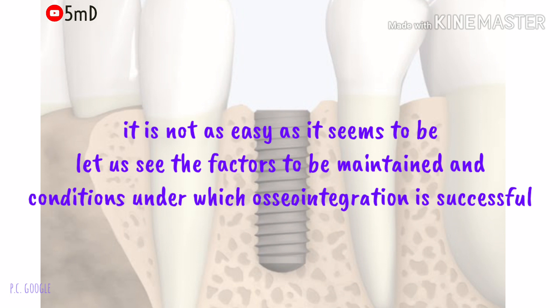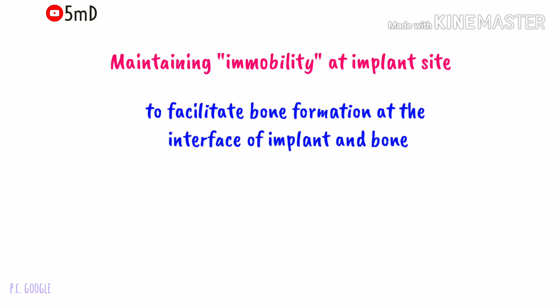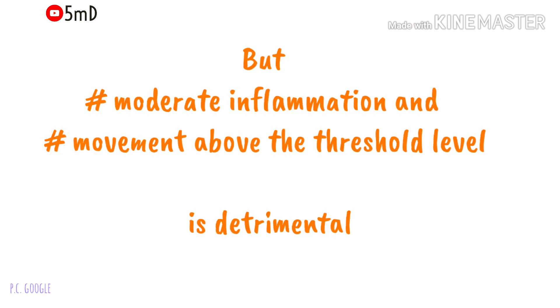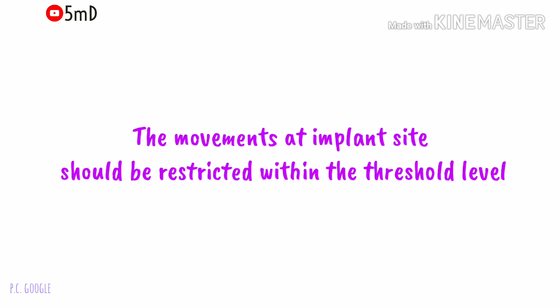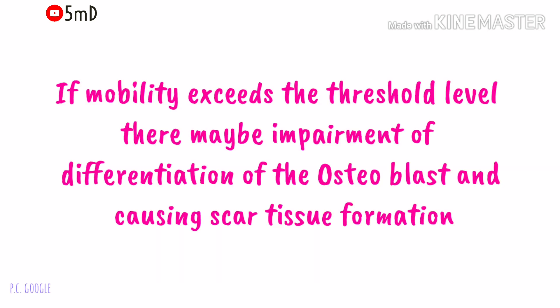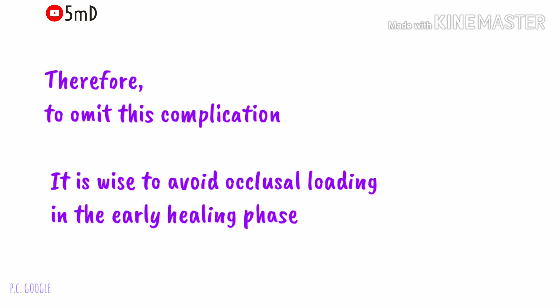Osseointegration — binding of bone to implant — is not as easy as it sounds. It requires specific conditions optimal for bone formation and wound healing. First and foremost, like a fracture site requires immobility for a few weeks, the implant site also needs immobility relative to the site for bone formation at the surface. Moderate inflammation and movement above the threshold limit is detrimental. The movement should be restricted within 150 micrometers at the interface; if it exceeds this, it may impair the differentiation of osteoblasts and fibrous scar tissue may form.